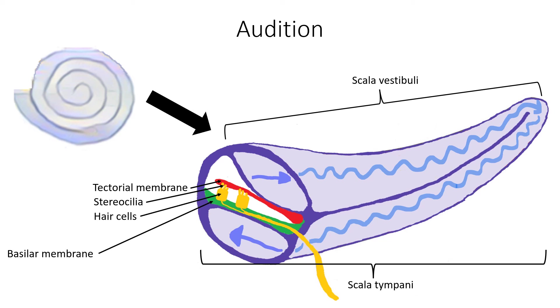This triggers nerve impulses that travel down the auditory nerves to the brain. However, when the stereocilia bend towards the shortest member of each group, ion channels close.